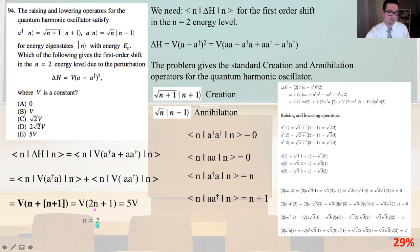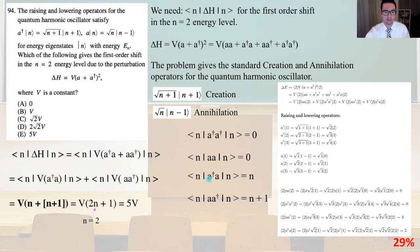ETS gave us n equals 2. It could give a different n, which you could solve for using the equation 2n+1. You can also be mindful that there might be more than one a†a term or aa† term. Nonetheless, there was one a†a term and one aa† term, n equals 2, and so the answer is 5V, answer B.